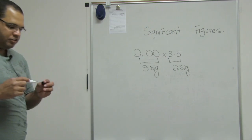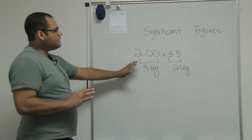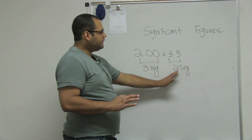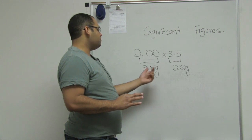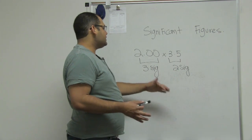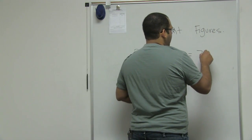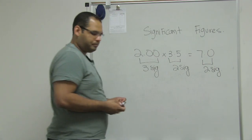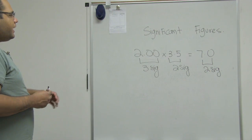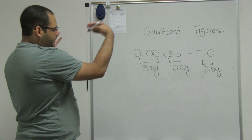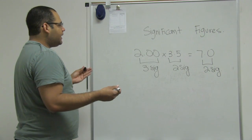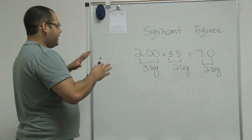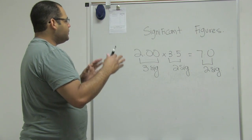For multiplication and division, I'm checking how many sig figs each of my numbers has, and I will keep the same amount as the least sig figs that I found. So between two and three, two is smaller than three, so my final answer will keep two sig figs. The same rule applies for division — I count how many sig figs I have in each number, so if I have two and five, I still keep two sig figs.